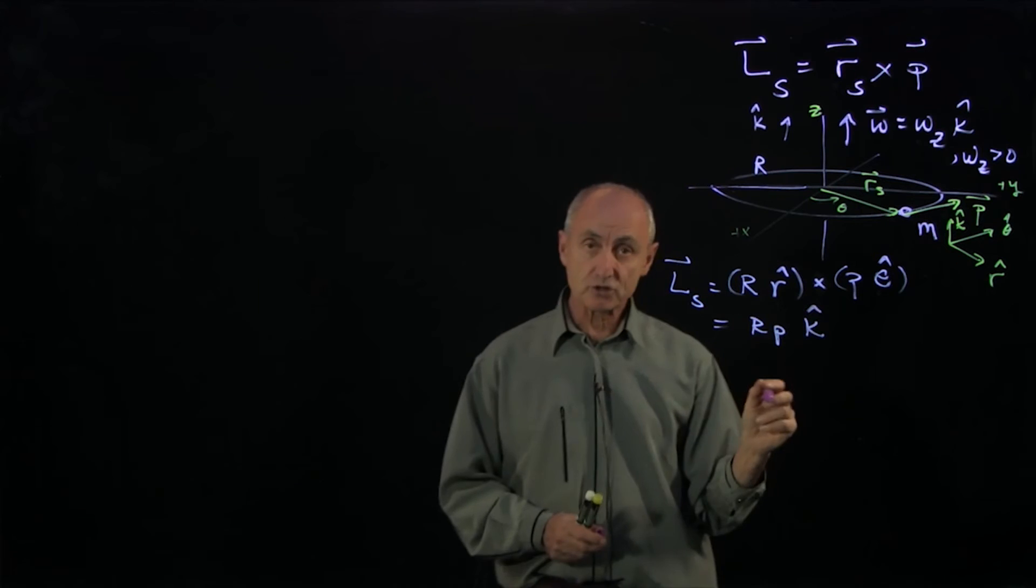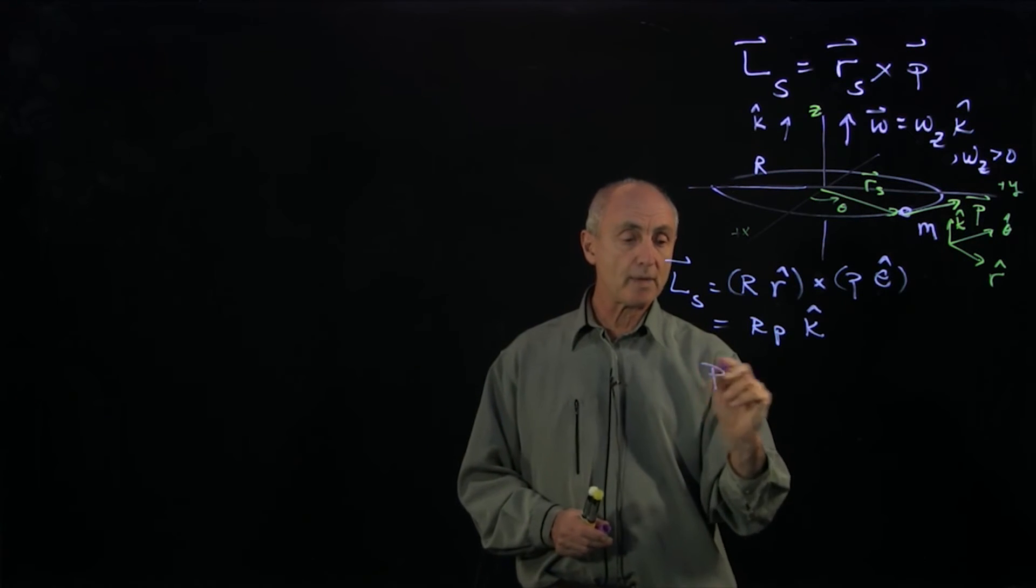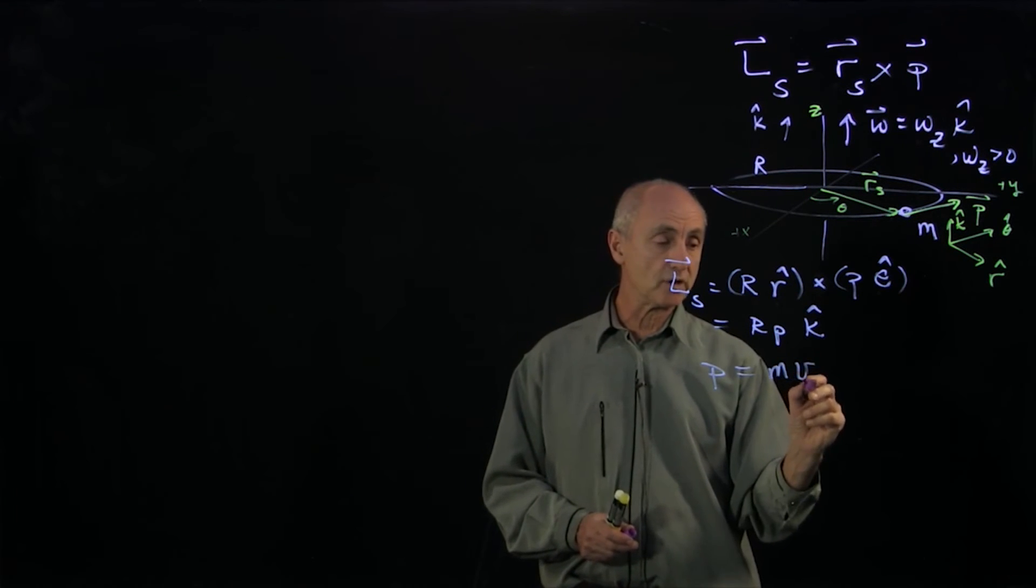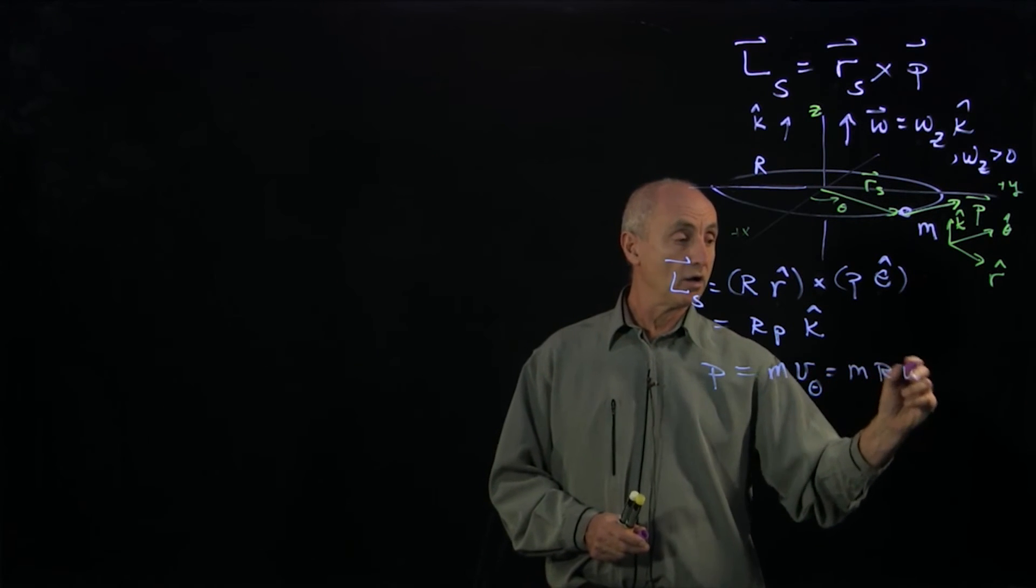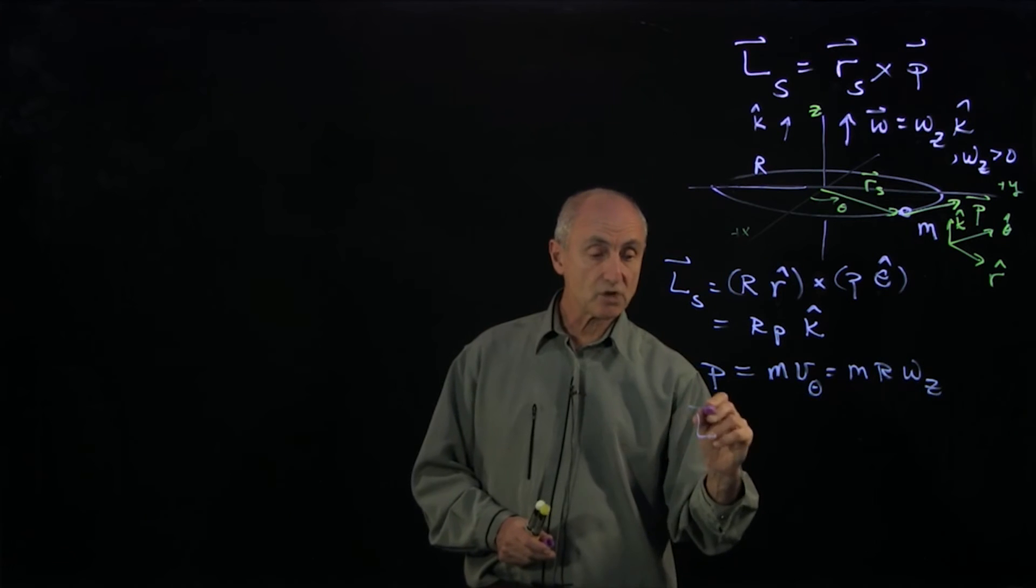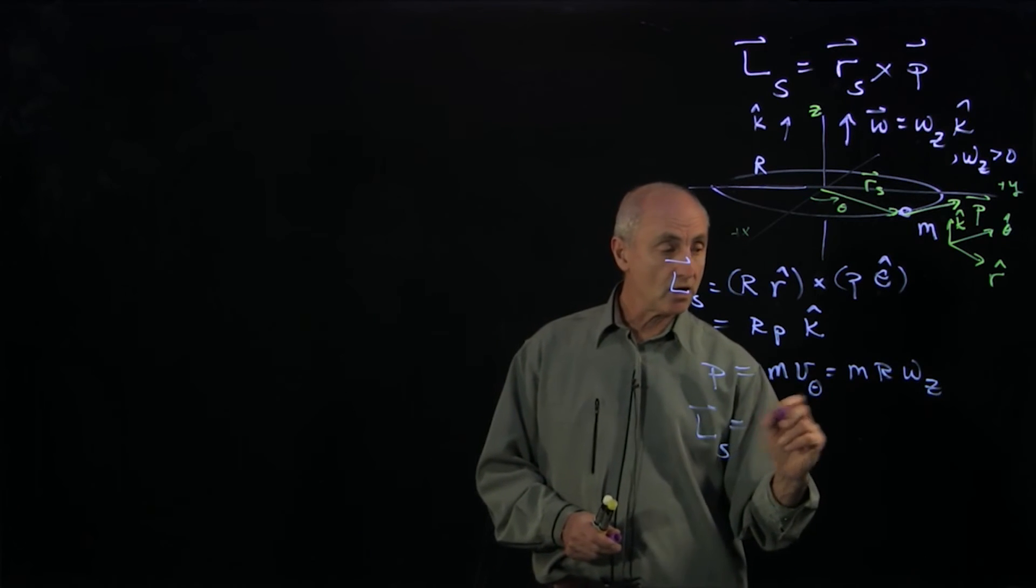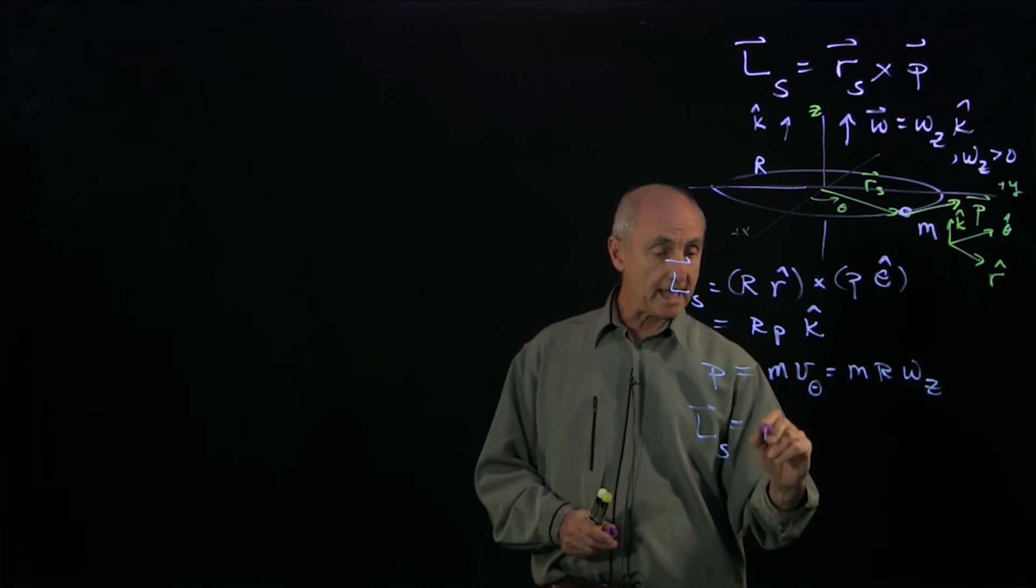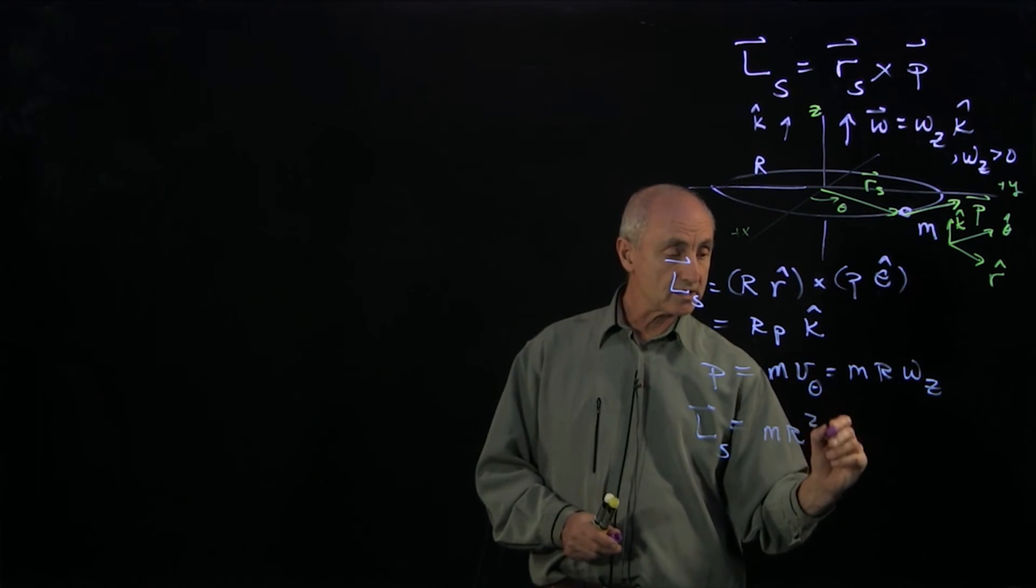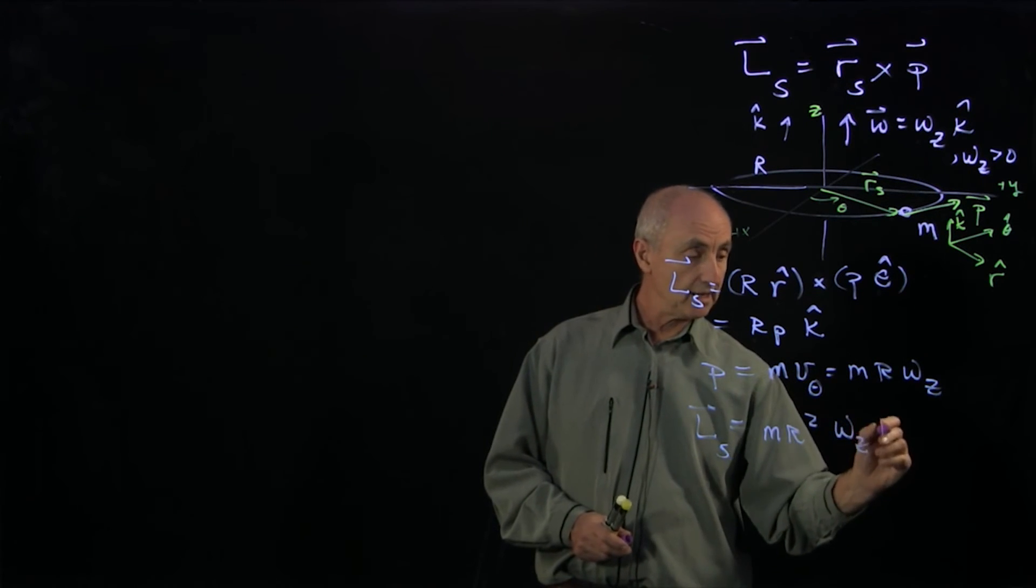Now for circular motion, the momentum magnitude is m times the magnitude of the theta component. We've made that positive, which is m r omega_z. And so L_s is, there's an r here and another r there, so we get m r squared times omega_z k-hat.